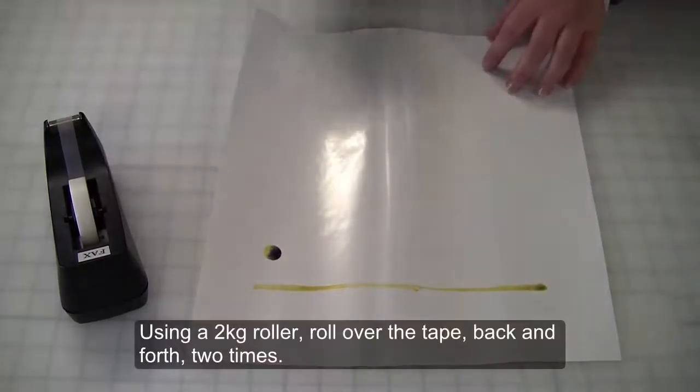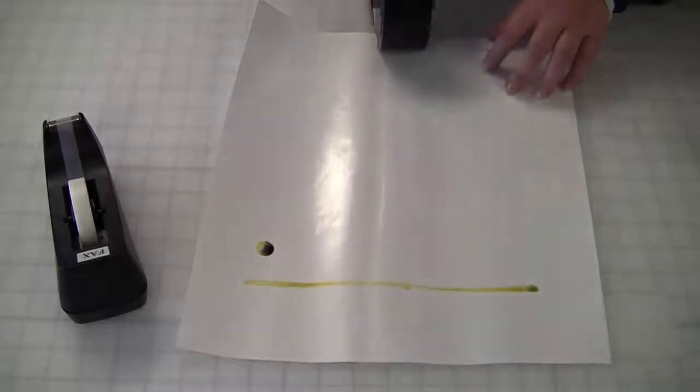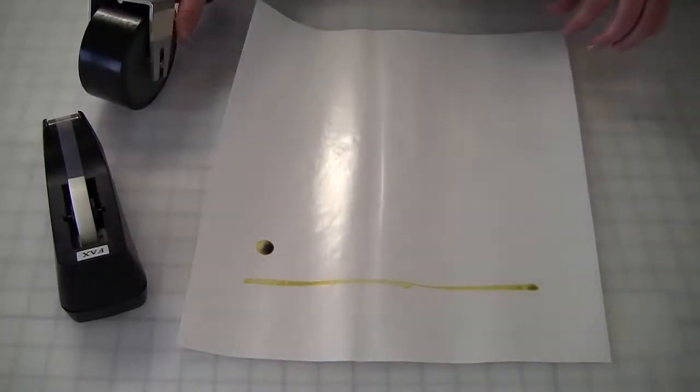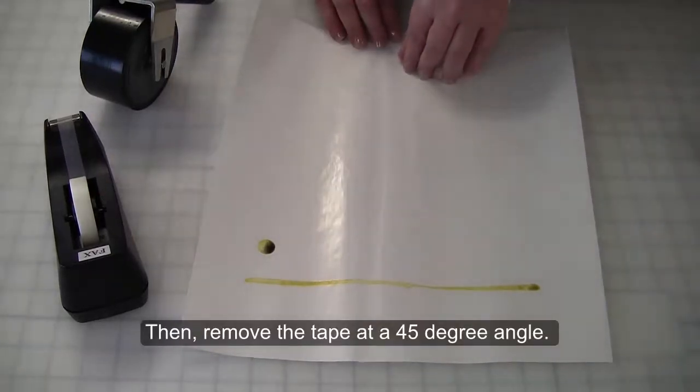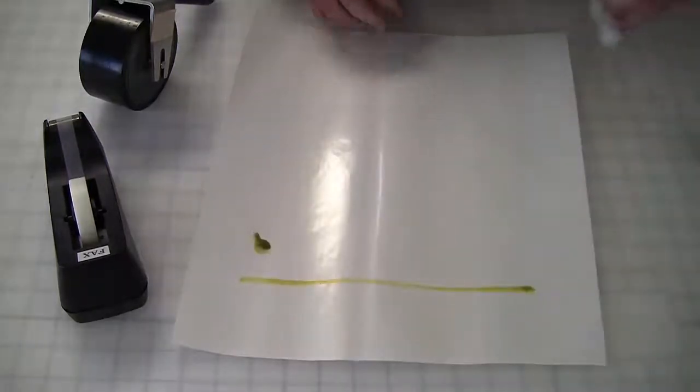Using a 2 kilogram roller, roll over the tape back and forth two times. Let it dwell for about 5 minutes. Then, remove the tape at a 45 degree angle.